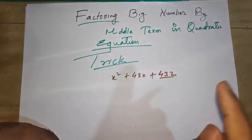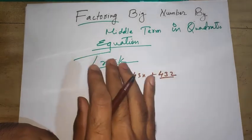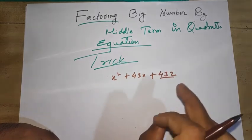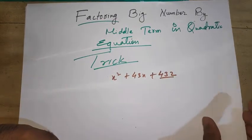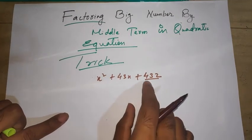So no need to worry. I'm going to give you a very shortcut trick to get the factors of such numbers. Let's see that video properly. Let's start without wasting time. You see 432 is there.